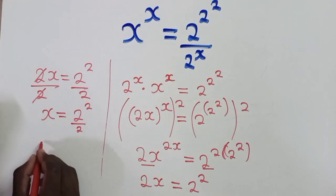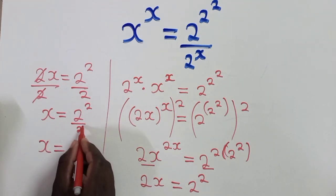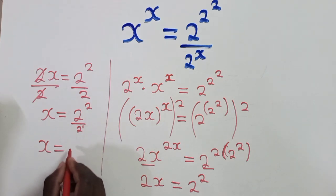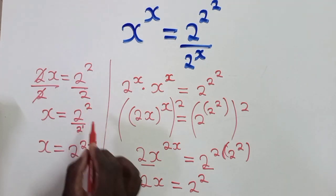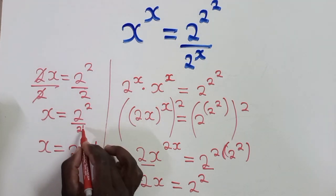Now from this stage, using the laws of indices, we have the same base here, 2 and 2 here. There is a power 1 here. So we shall have 2 power 2 minus a 1. Same basis, you subtract the powers.